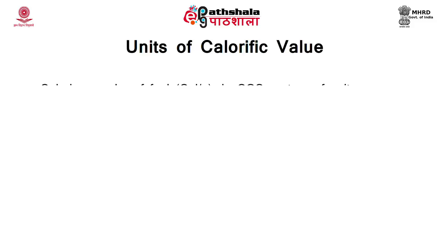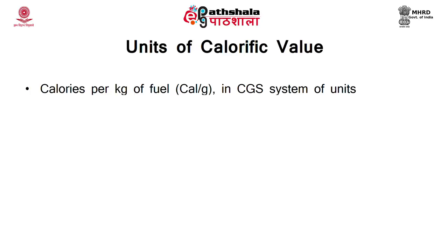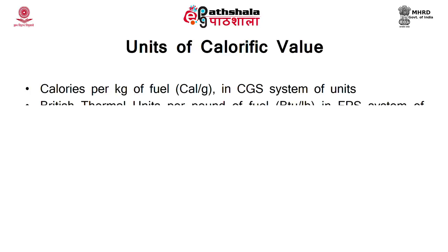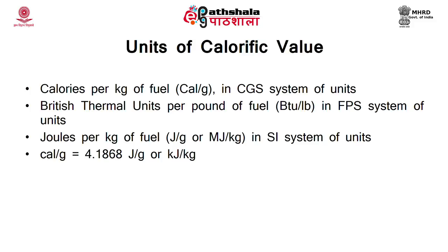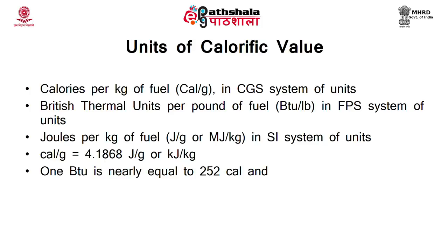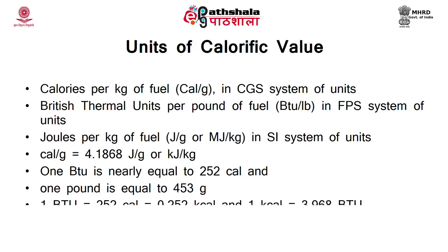What are the units of calorific value? In the CGS system, calories per kilogram or calories per gram is used. In the FPS system, it is British thermal units (BTU) per pound, and in the SI unit, it is joule per gram or megajoule per kilogram. 1 calorie per gram is equivalent to 4.1868 joule per gram or 4.1868 kilojoule per kilogram. 1 BTU equals 252 calories, which equals 0.252 kilocalories, and 1 kilocalorie equals 3.968 BTU.